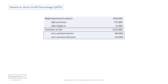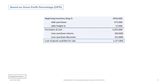Then we deduct any purchase returns or allowances. In our example, we have $60,000 in purchase returns and there are also purchase discounts. Purchase discounts usually arise from taking advantage of early payment discounts — Manzir has $15,000 in early payment discounts. When we take beginning inventory plus freight and purchases, then deduct purchase returns, allowances, and discounts, we end up with cost of goods available for sale — not cost of goods sold. Subtracting $60,000 and $15,000, we have a cost of goods available for sale, or COGA, of $1,377,000.